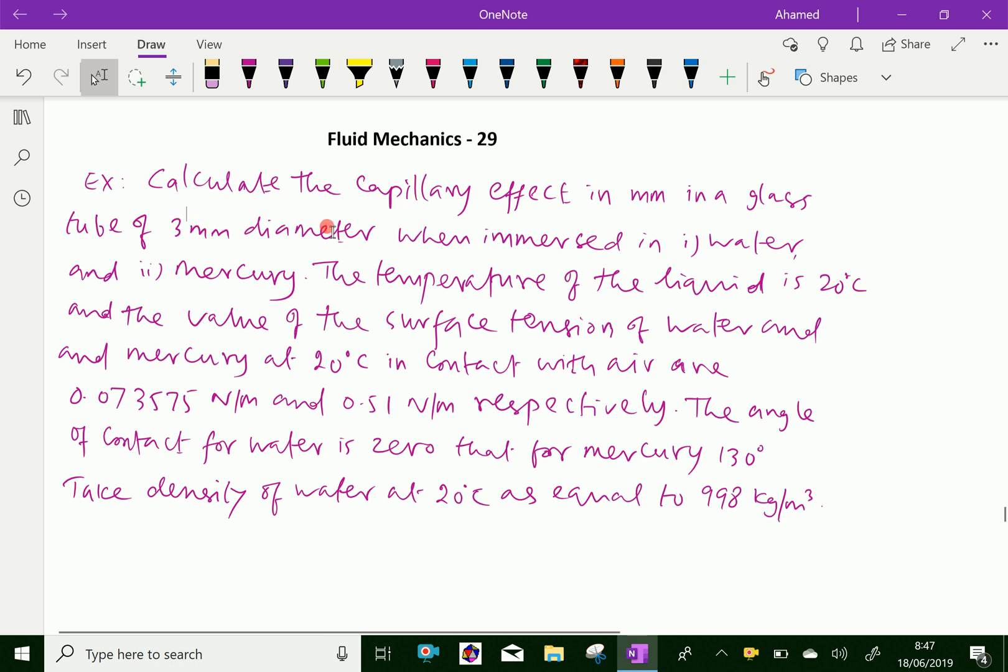Here, example: calculate the capillary effect in mm in a glass tube of 3 mm diameter when immersed in water and mercury. The temperature of the liquid is 20 degrees Celsius and the value of the surface tension of water and mercury at 20 degrees Celsius in contact with air are 0.073575 N/m and 0.51 N/m respectively. The angle of contact of water is zero and that for mercury is 130 degrees. Take density of water at 20 degrees Celsius as equal to 998 kg per meter cube.